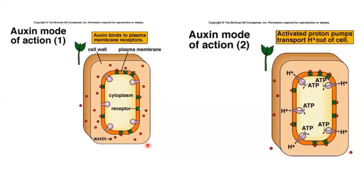In the diagram, auxin is shown in red binding to cell surface receptors, causing hydrogen ions inside the cytoplasm to leave through proton pumps into the cell wall, initiating the events leading to cell elongation.